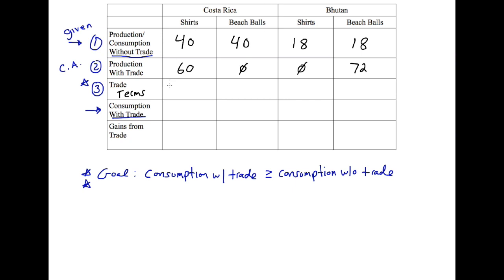I like to start from the left and first determine who is going to import and who is going to export. Since Costa Rica is specializing in shirts — producing 60 shirts and zero beach balls — they're going to give up some shirts and trade them to Bhutan, so Bhutan must be gaining those shirts. Costa Rica is not producing any beach balls, so they must gain beach balls from Bhutan, who is specializing in beach balls and producing 72.